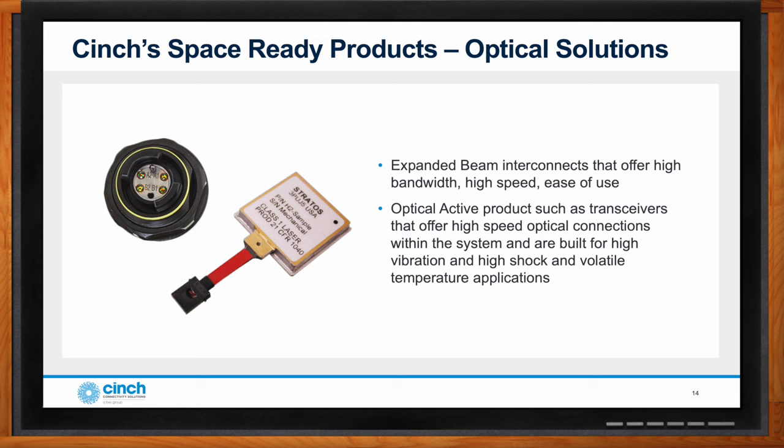When copper transmission isn't sufficient, optical connections using glass and lasers can be used. We offer high-reliability optical transceivers that are robust against high vibration and shock for space launches, as well as hybrid transceivers. Our expanded beam interconnects provide optical transmission for very high speeds and large bandwidth, offering ease of use for applications where copper connections fall short.